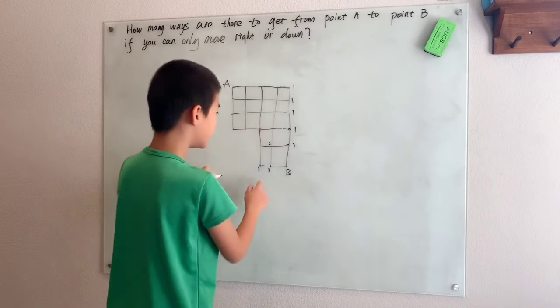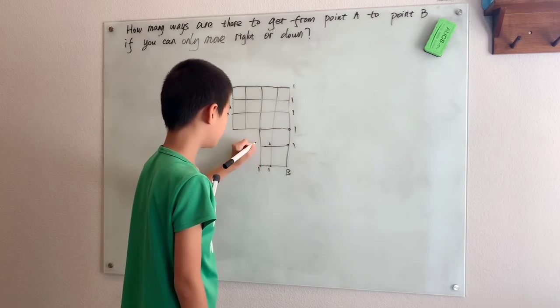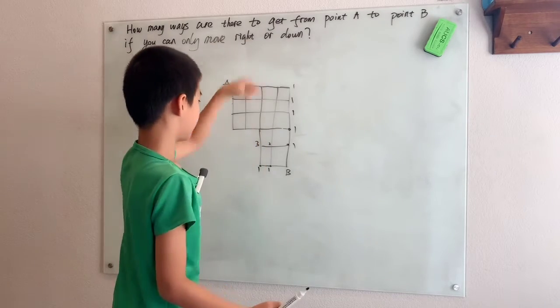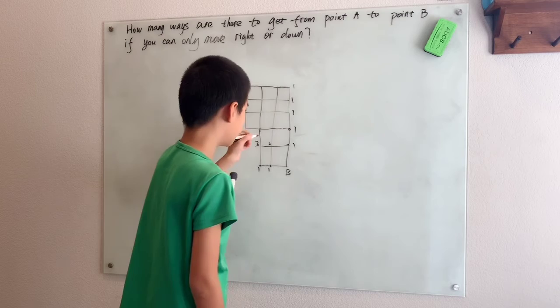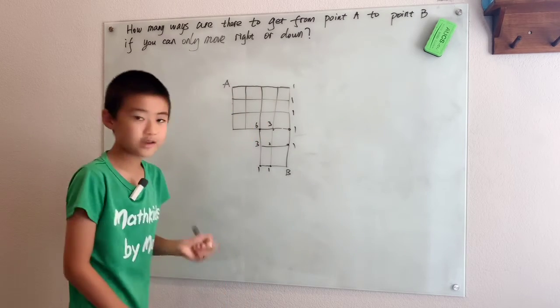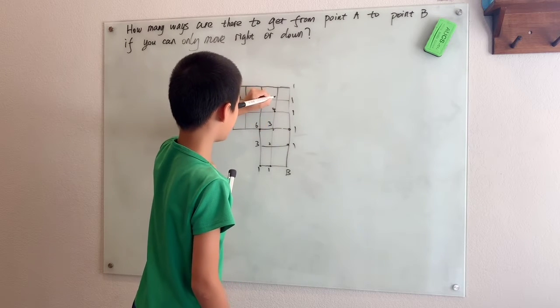Well up here there's one plus one, two ways. Here well there's still one plus two, three ways. So you can just add the numbers that are to the right and to the down. Three. This is six. Well three plus one is four. Four plus one is five. Five plus one is six.